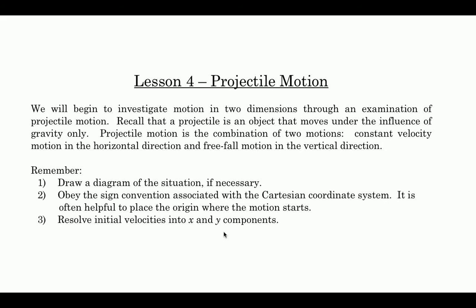So projectile motion is, of course, one example of motion in two dimensions. It's an object that's going to move through both the x and y dimension at the same time. Relative velocity and relative motion is another example of two-dimensional motion. But in projectiles, we have to remember that a projectile is an object that moves under the influence of gravity only. In our simplified version of physics, projectile motion, we do not really incorporate air resistance into our problem solving yet. What that means is that projectile motion, for our purposes, is the combination of two different types of motion: constant velocity in the x direction and then free fall motion in the vertical direction.